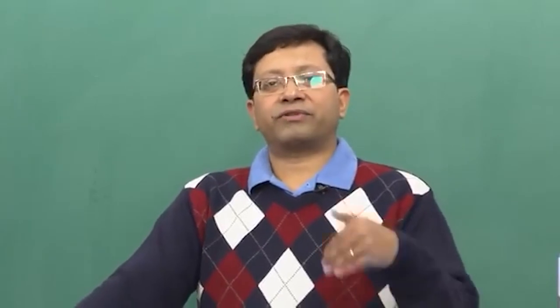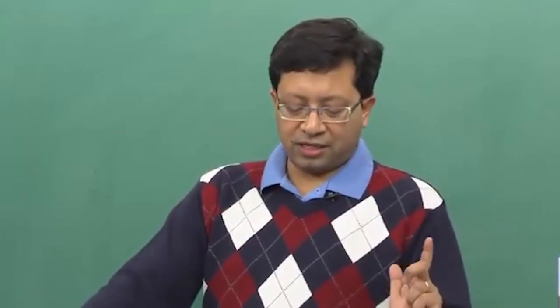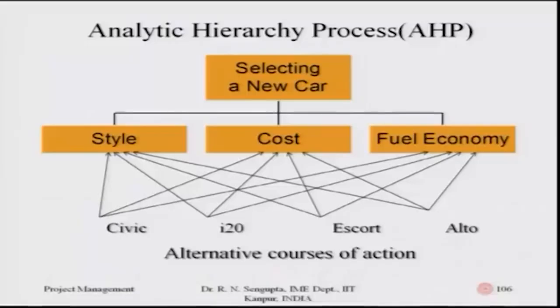As we were discussing the AHP problem, in the last lecture I mentioned that you are trying to select a car from a list: Civic, I-20, Escort, and Alto, which is the last level in the hierarchy. I mentioned style, cost, and fuel economy as criteria which can be broken down into tertiary and more levels. This is the primary hierarchy, and I will simply consider the problem to give a good flavor of how AHP can be used.